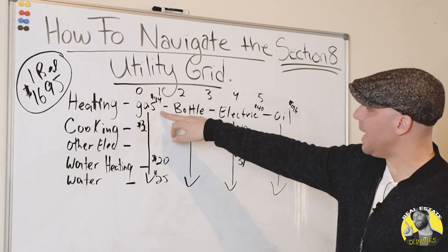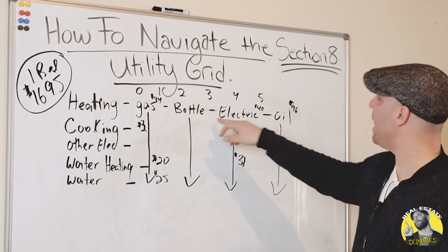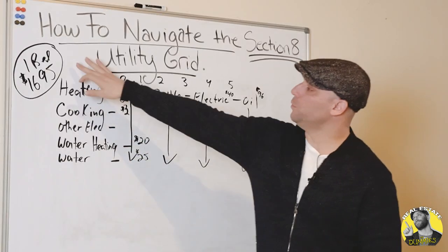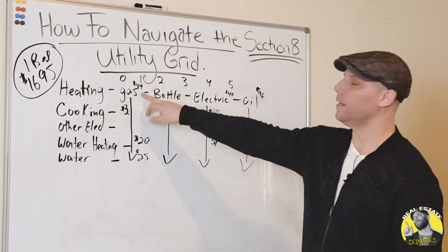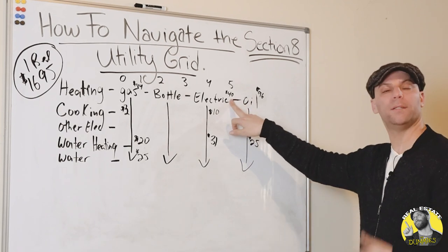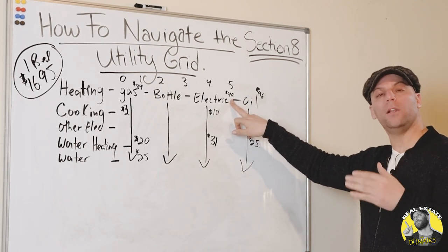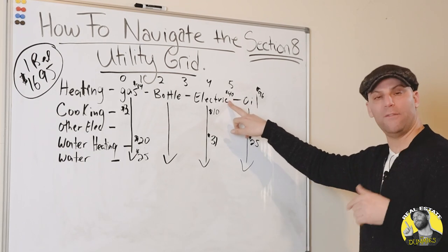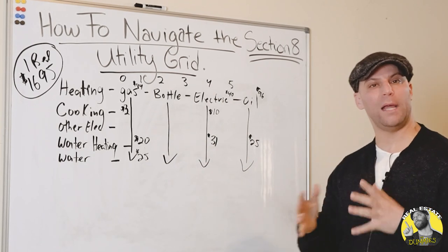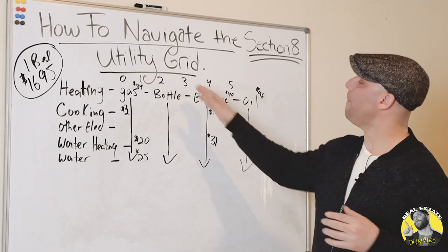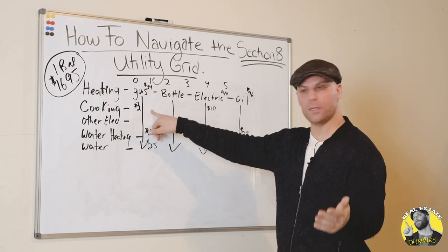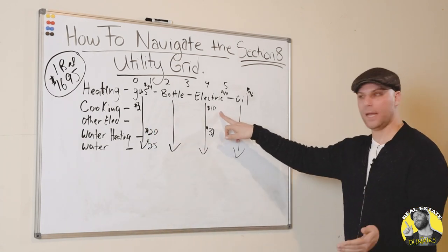There are different options for each utility: gas heating, gas cooking, bottle gas, electric, and oil. Starting with the $1,695 number — if you had gas heat you would subtract $84. Electric, though, is only $40, so you as the landlord are going to net more money if you have an electric heat pump system in the house. These change every year, so you have to play with how you're building the house versus how much you're going to get as a net number. For cooking, if it's gas you deduct $3, but if it's electric you deduct $10.